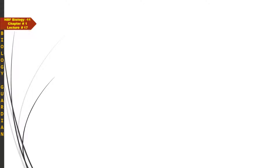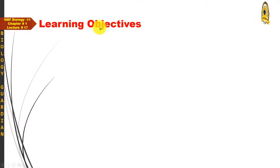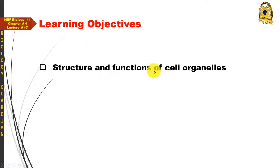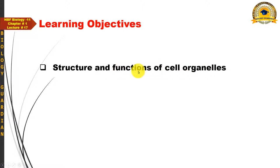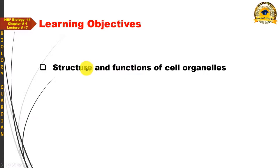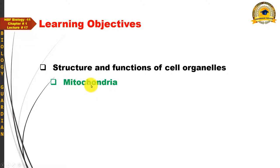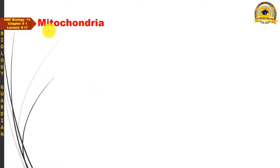Today's learning objectives include the structure and functions of different cell organelles. In the previous two lectures we covered some cell organelles, and today we will cover the remaining ones — including mitochondria, its structure and function, and plastids with their different types. After centrioles, we now discuss mitochondria.